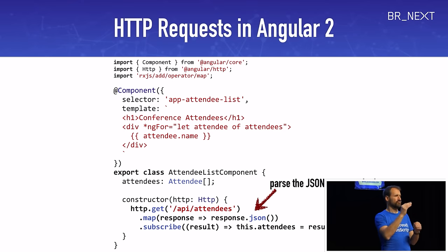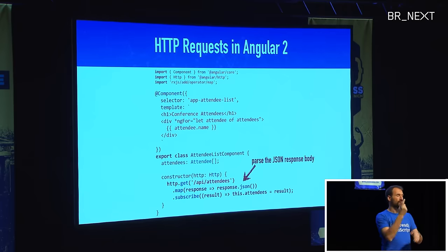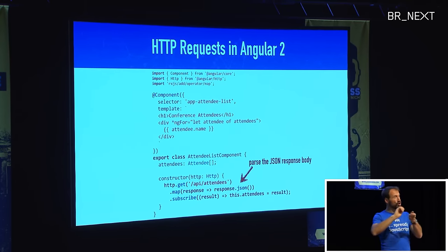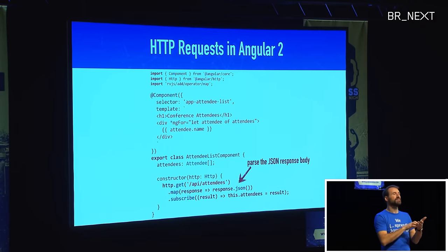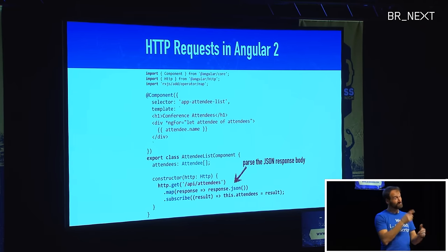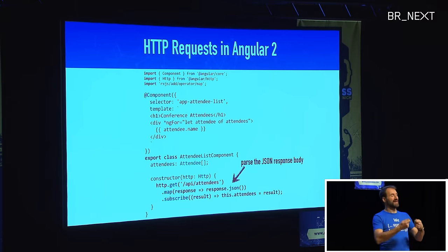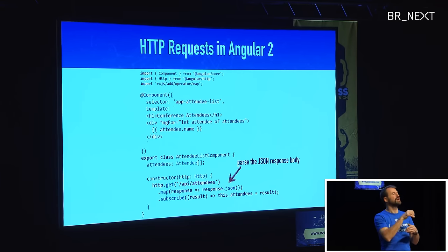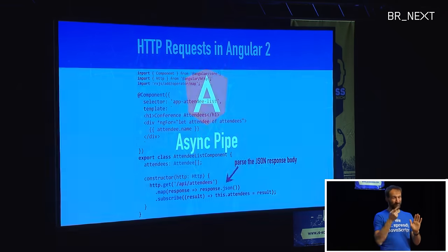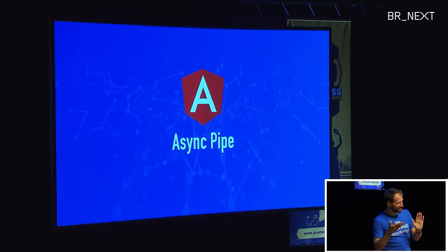Let's get back to our problem. We use the map operator and call a method called JSON on the response — that transforms our JSON into a JavaScript object. When this flows through the pipe, we actually get the result as the JavaScript representation of that JSON sent from the server. With that, our example works in the browser.